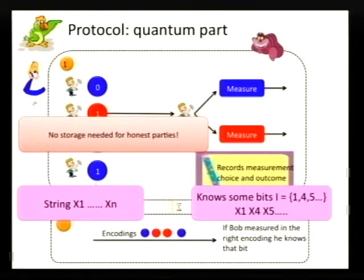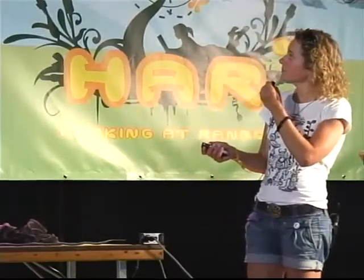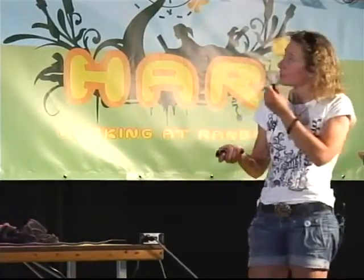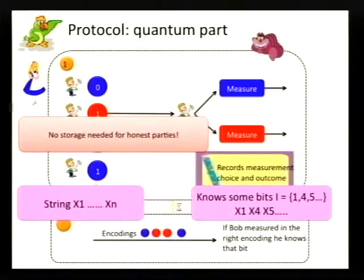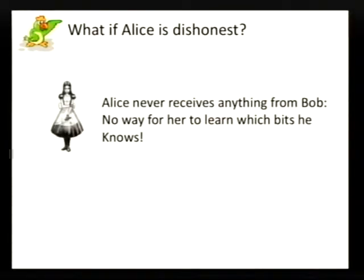One important thing to emphasize is that there is no storage needed for the honest parties — no quantum storage, and in fact no quantum computer is needed to execute this protocol. In the first step we want to be sure that Alice cannot learn which of the two bits Bob has received. This is intuitive because communication only ever went from Alice to Bob and nothing ever went back, so there is no way for Alice to learn anything since she has not received any information from Bob.